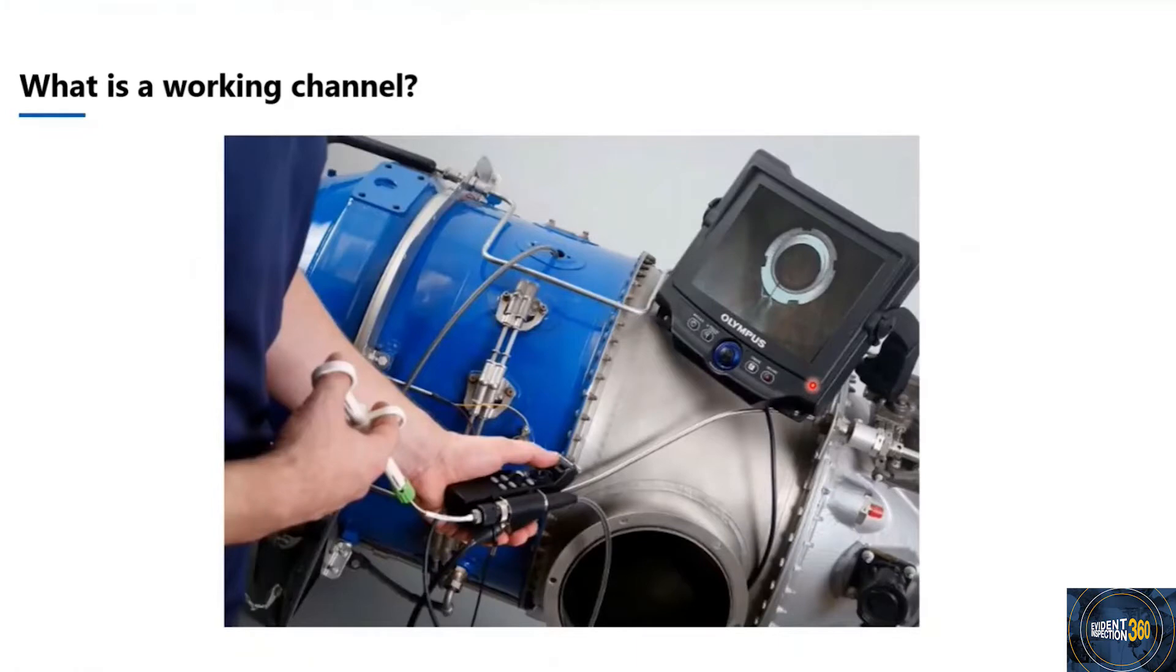So first, what is a working channel tool? We have two different types of retrieval tools. We have what we call an external retrieval tool, which is a wire that is connected to the outside of the scope using tape, for example. The other option is what we're talking about today: the working channel scope. The working channel is basically a passage within the scope or the insertion tube that you feed the internal retrieval tool wire through. The benefit of using a working channel is that the entire system of the insertion tube and the retrieval tool is put together and more compact, whereas with external retrieval tools, it's less reliable and has a higher chance of the wire detaching from the insertion tube.